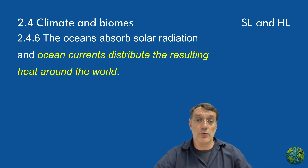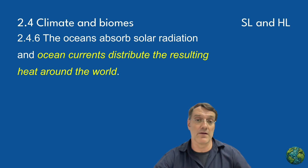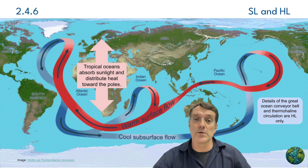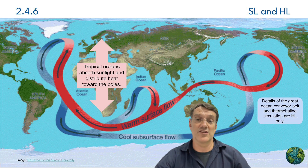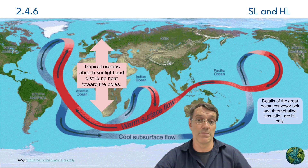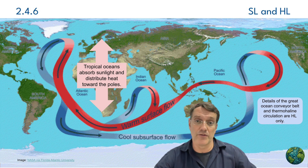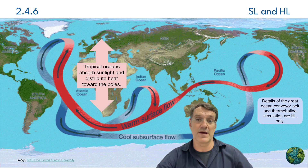Oceans play a really important role alongside atmospheric circulation in determining climate patterns. They absorb solar radiation and distribute heat through ocean currents. This oceanic conveyor belt helps moderate temperatures globally and influences local climate patterns, especially in coastal regions. This map shows how tropical oceans absorb sunlight and distribute heat towards the poles — the warm surface flow and cool subsurface flow at depth creates a global circulation pattern that helps regulate Earth's climate system.